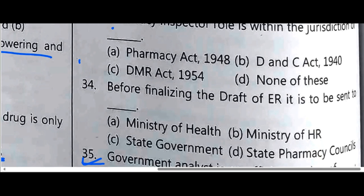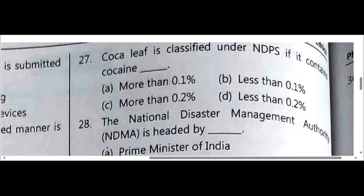Before finalizing the draft of ER, it is to be sent to Option C: State Government.